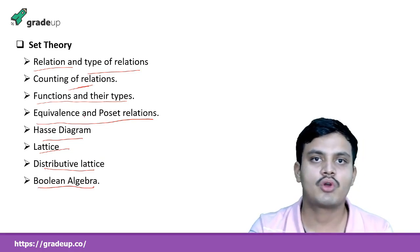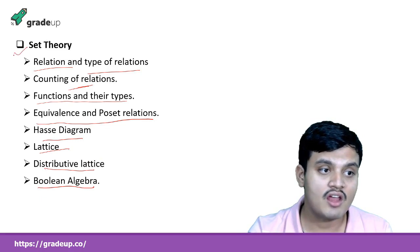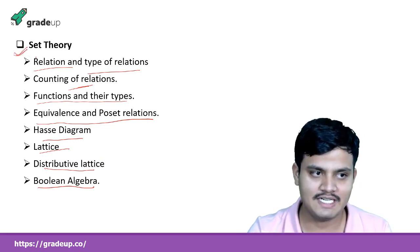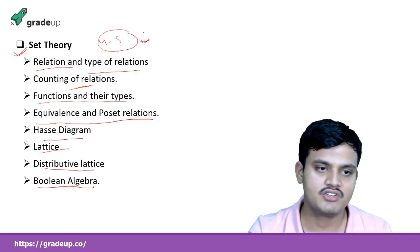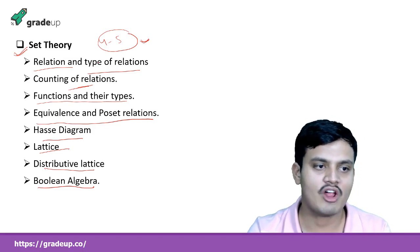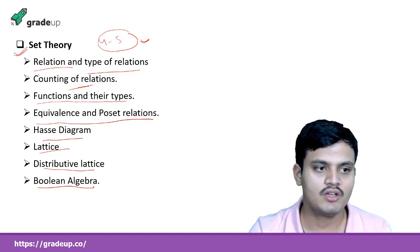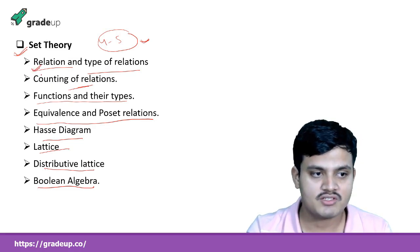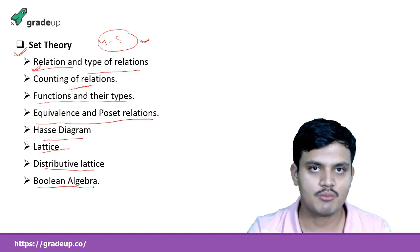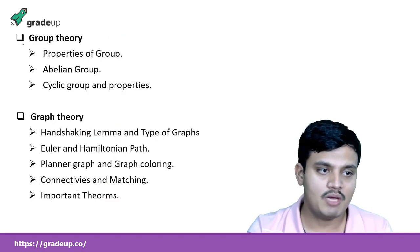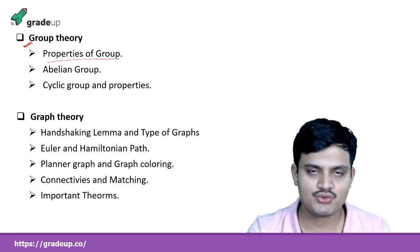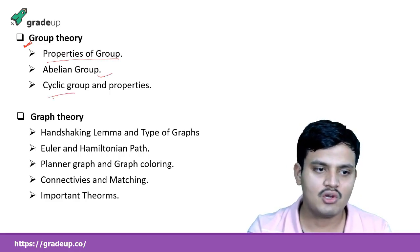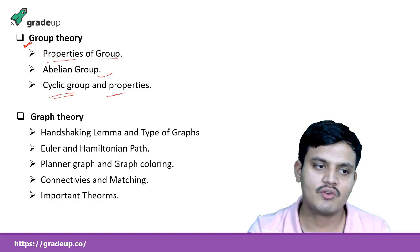We will cover functions and their types, equivalence and partial order relations, Hasse diagrams, lattice, distributive lattice, and Boolean algebra — all very important from a GATE point of view. Set theory has the highest weightage among all discrete mathematics topics, about four to five marks on average. Relations also help you understand DBMS concepts better. Then we will cover group theory — basic properties of a group, Abelian groups, cyclic groups, and their properties.